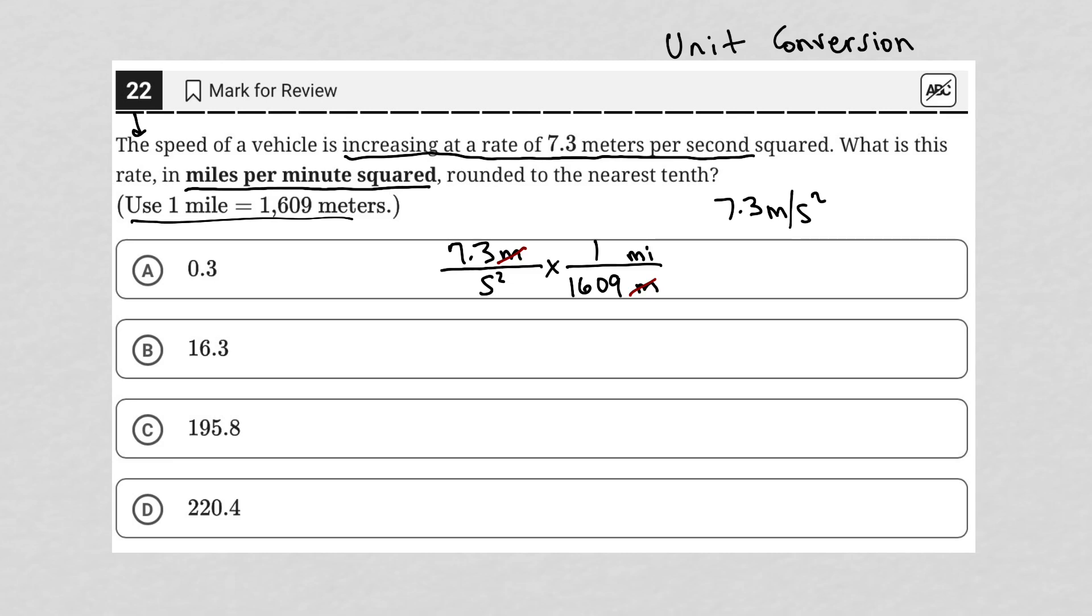So all that's left is to get to minute squared instead of second squared. I'm going to multiply that by seconds squared over minutes squared. And what's that conversion? Well, I know that 60 seconds equals one minute, right? But how about squared?